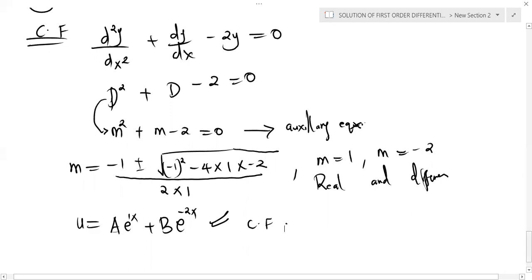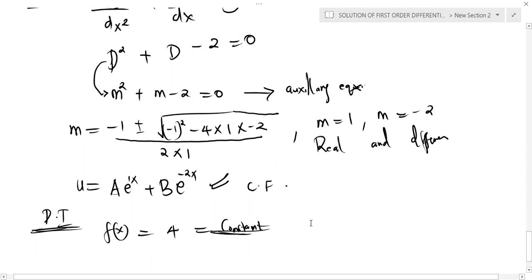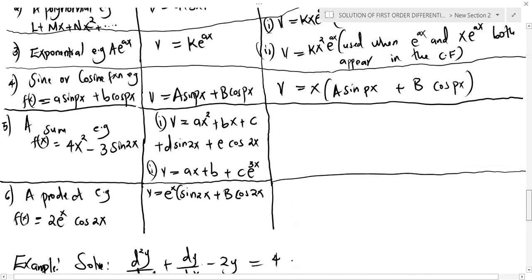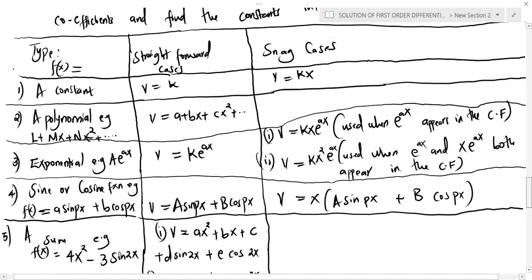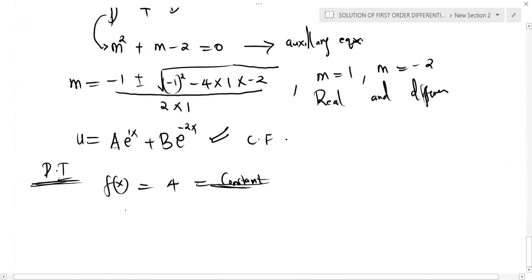To get the PI, we consider the f(x) side. Our f(x) is 4, which is a constant. Coming to the table for a constant, the assumed PI is k. So we take v = k as our assumed PI.